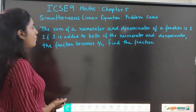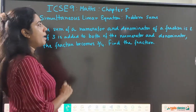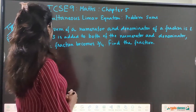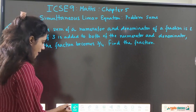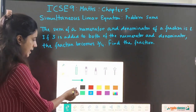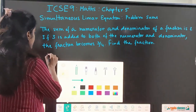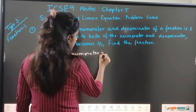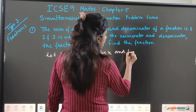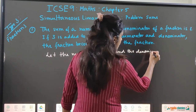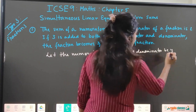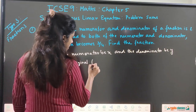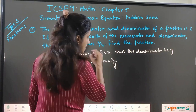Today we are going to cover the sums on fractions. The first question says: the sum of a numerator and denominator of a fraction is 8. If 3 is added to both the numerator and denominator, the fraction becomes 3 by 4. Find the fraction. When you have this kind of sum, the first thing we need to consider is that the numerator is x and the denominator is y. So let the numerator be x and the denominator be y. Therefore the original fraction is x upon y.